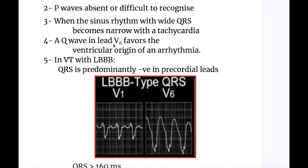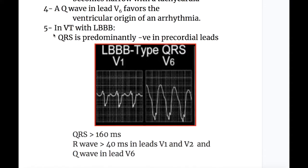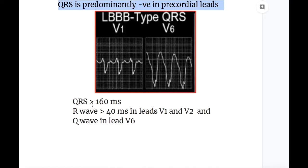Number four — a Q wave in chest lead V6 favors ventricular origin of arrhythmia. Number five — in ventricular tachycardia with left bundle branch block, the QRS is predominantly negative in precordial leads, QRS is more than 160 milliseconds, and the R wave in LBBB with VT is more than 40 milliseconds in leads V1 and V2, with a Q wave in lead V6.